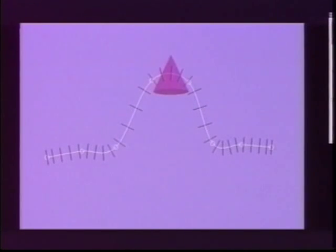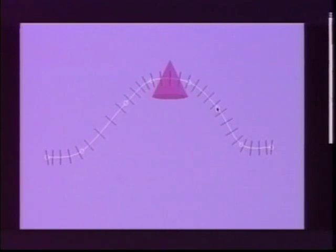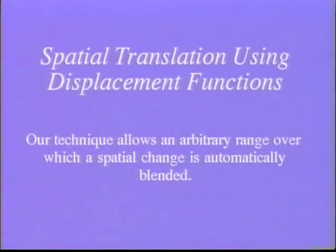This example shows an animator trying to blend a single spatial change into an existing motion path. First, the animator must move several control points to blend the change into surrounding motion. Once this is done, the animator has also introduced new and undesired timing changes into the animation. With KB splines, timing and position are inseparable.